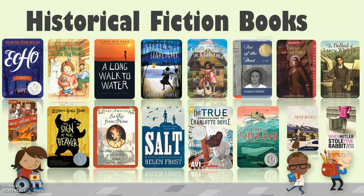Here are some great historical fiction books you can find at the Niles District Library: Echo by Pam Muñoz Ryan, the Little House on the Prairie series by Laura Ingalls Wilder, A Long Walk to Water by Linda Sue Park, Stella by Starlight by Sharon Draper, Gone Crazy in Alabama by Rita Williams-Garcia — a three-book trilogy, Out of the Dust by Karen Hesse which won the Newbery Award and is about the Dust Bowl in the 1930s told in diary format, and Enemy at the Fort, part of the American Girl History Mysteries series by Sarah Masters Buckley.